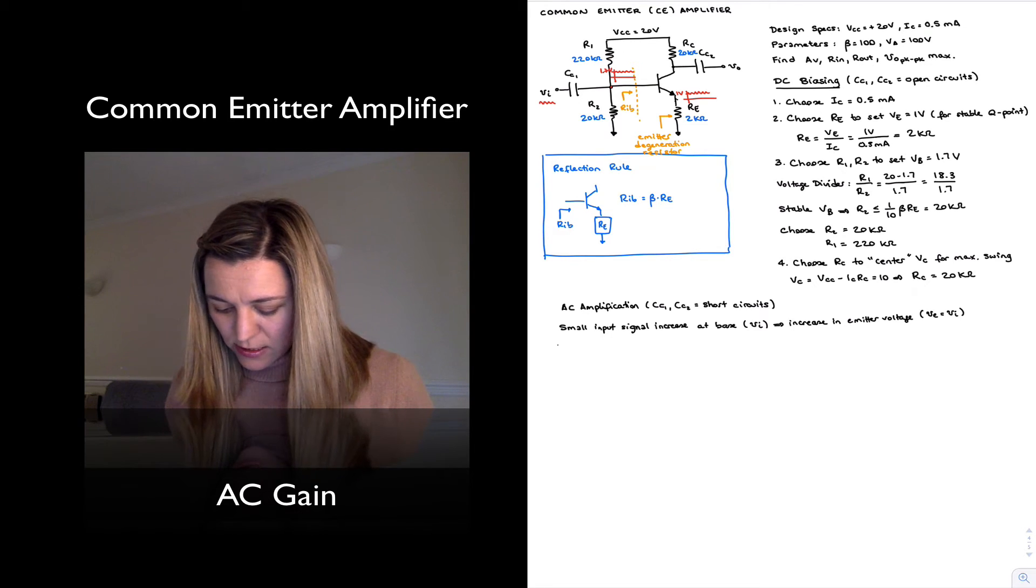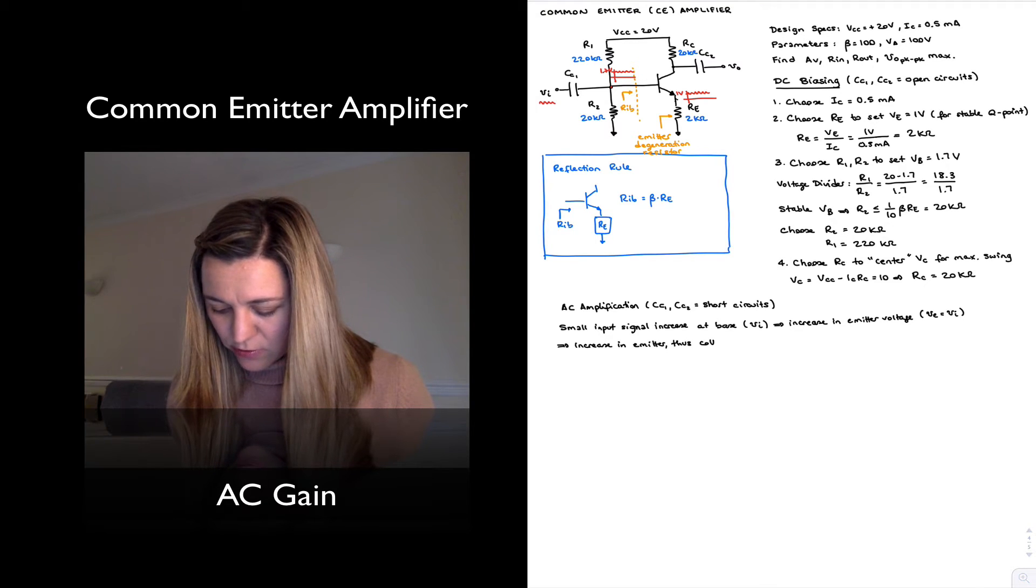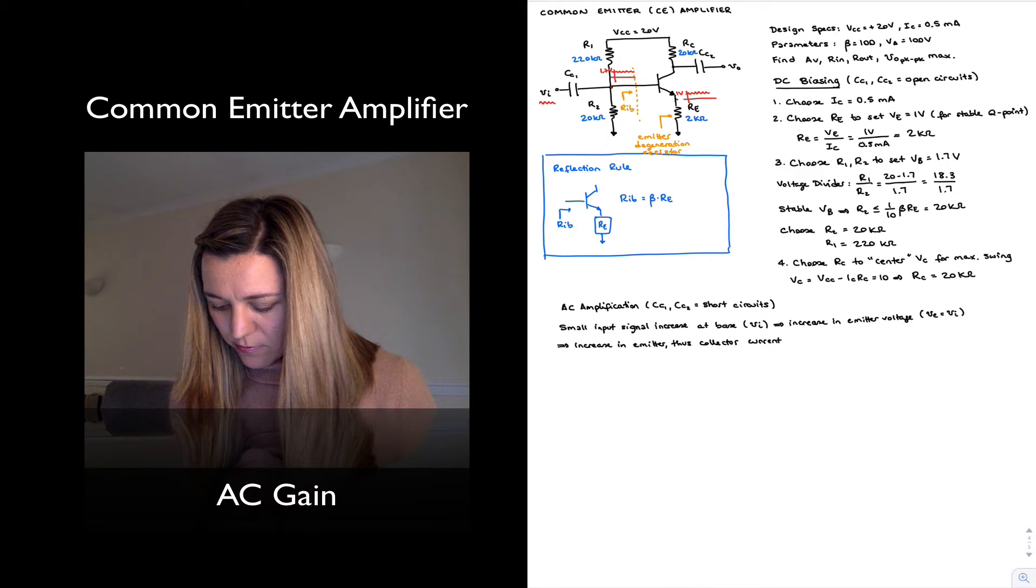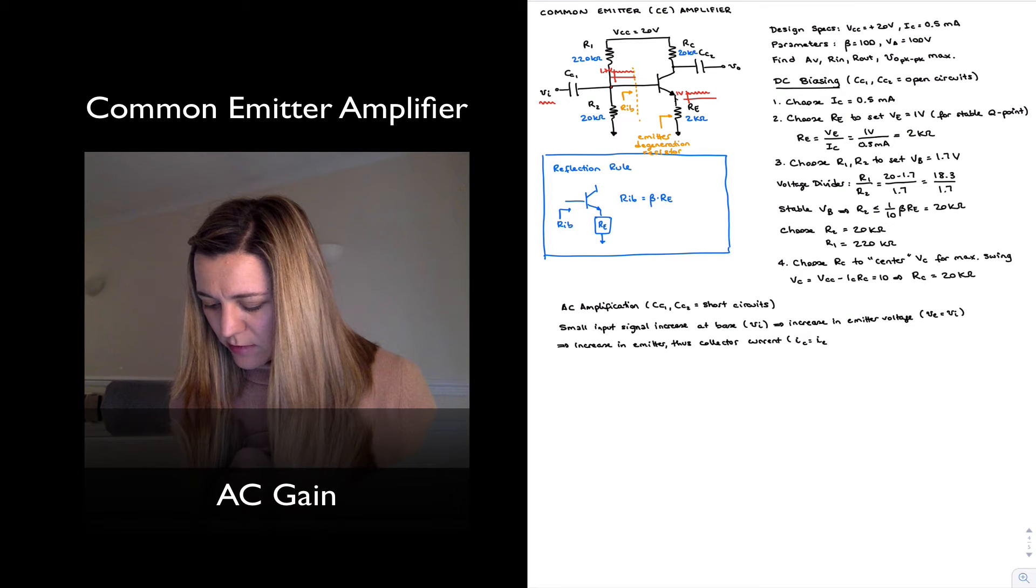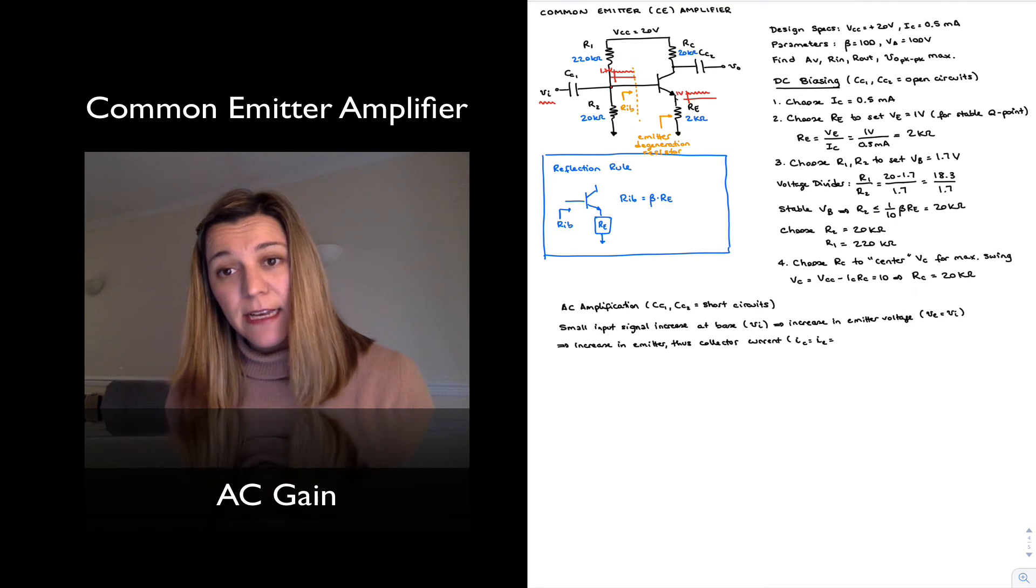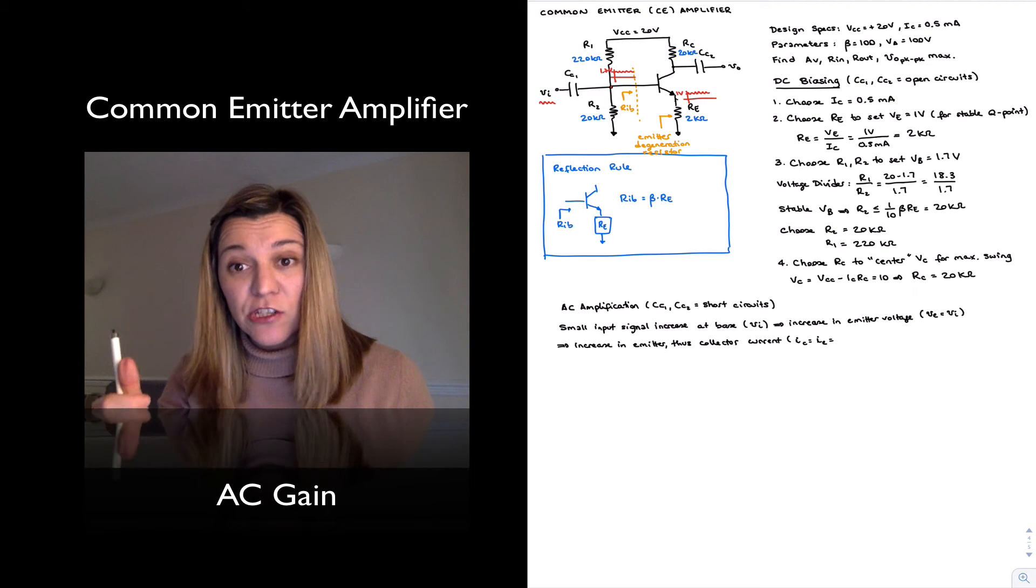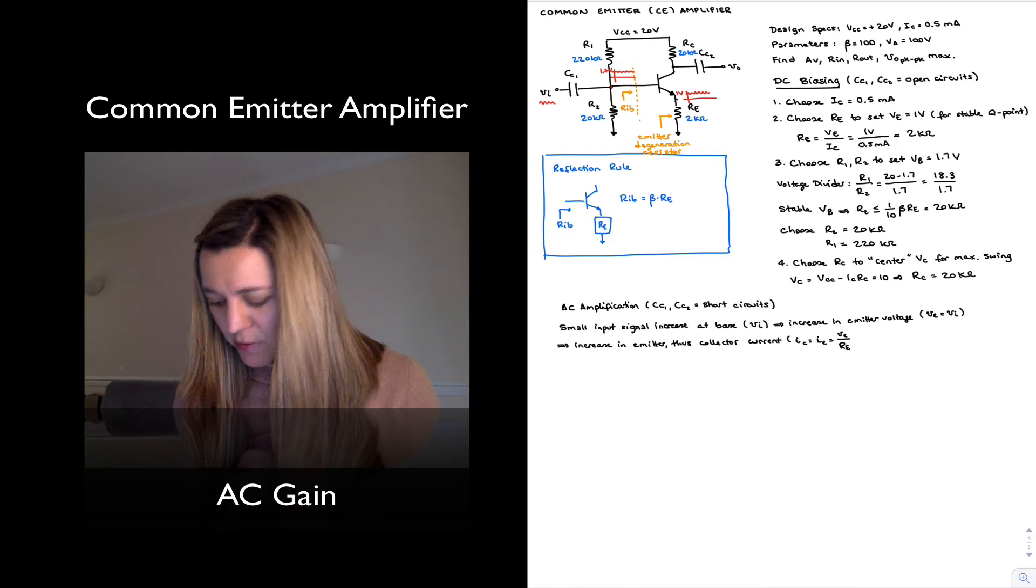And again, that delta, that small IC or small IE, the delta, the change in the collector current, is equal to the change or the increase in emitter voltage divided by the emitter resistance.